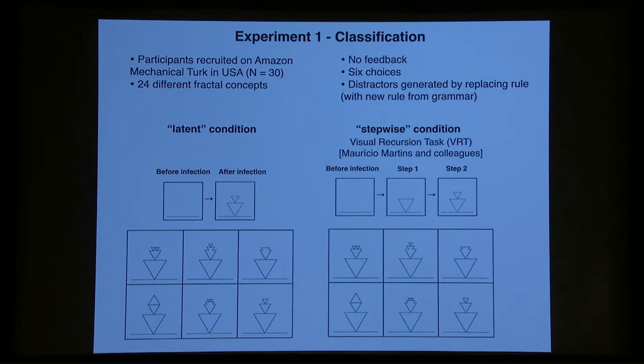Here's the experiment that we ran. It was a classification experiment. We recruited participants on Mechanical Turk, showed them 24 different fractal concepts. They didn't get any feedback throughout the entire experiment. They just made a guess and moved on, and there were six choices for each of the different concepts. It's a lot like the demo that we all did together a moment ago, and there's distractors generated by taking the base and swapping out the rule with an incorrect one and using that to produce distractors.